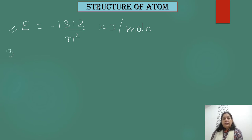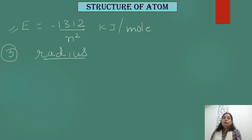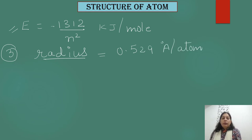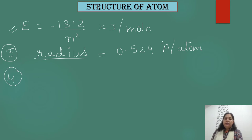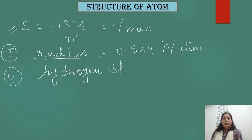The next success is that Bohr's model could also calculate the radius of the orbit. Not only energy, but the radius can also be calculated from Bohr's postulates. Its value is related to 0.529 Å × n. Additionally, Bohr's model could explain the spectrum formed by the hydrogen atom.